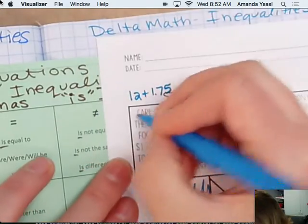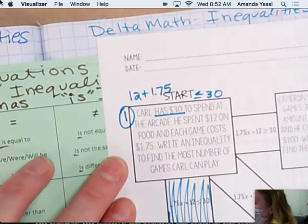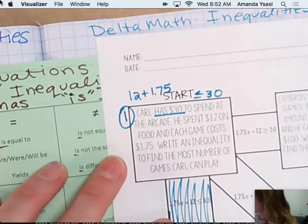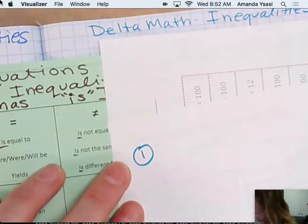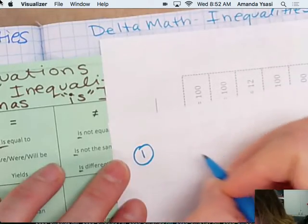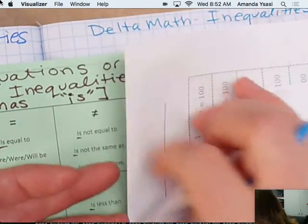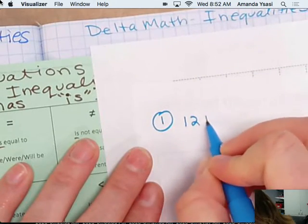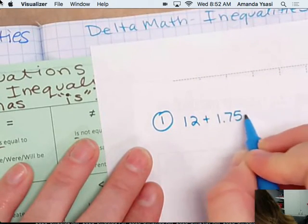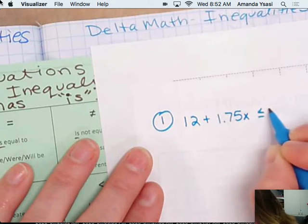This will be our first problem. So we are going to have to work this problem out. So turn it over on the back and put number one. Or you can write it in your journal. Either way is fine. You just have to make sure that you send me a picture of it. So it was $12 plus $1.75X is less than or equal to $30.